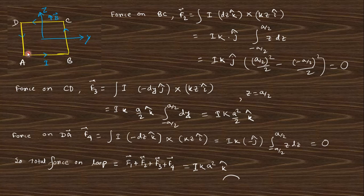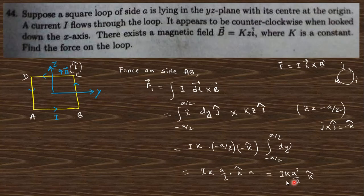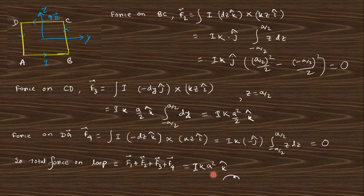Similarly, the force on the opposite side is also zero. For side CD, dl = −dy·ĵ and z = +a/2; ĵ × î gives −k̂, but the negative sign makes it positive, and integrating dy gives a. So the forces on AB and CD are both along k̂ and add together, giving the total force.